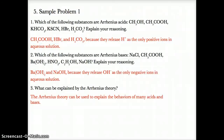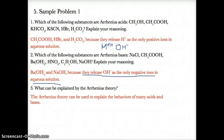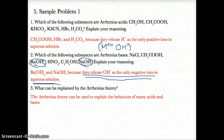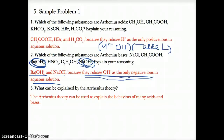Number two: Arrhenius bases release OH- as the only negative ions in solution. You can identify them if they have a positive ion in front followed by OH- at the end, or if they're on Table L. The only Arrhenius bases in the list are NaOH and Ba(OH)2 — both listed on Table L as common bases. NaOH has Na+ in front and OH- in back; Ba(OH)2 has Ba2+ in front and OH- in back.